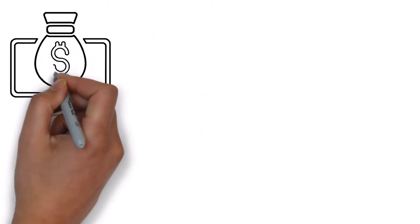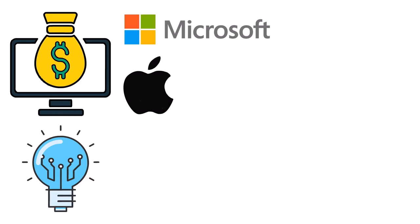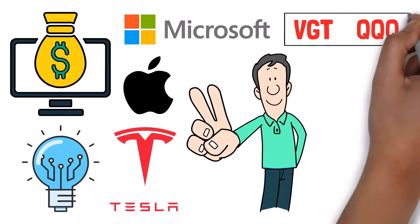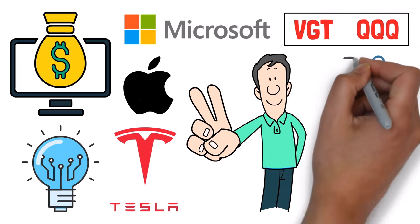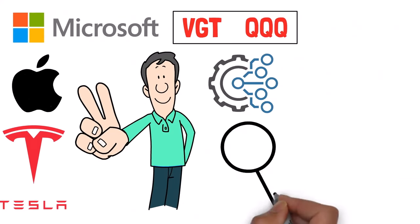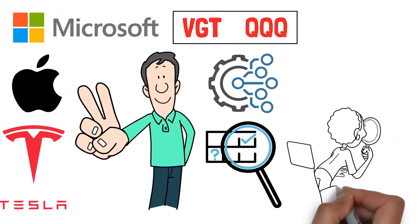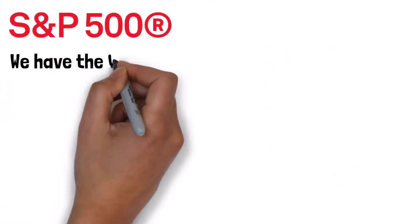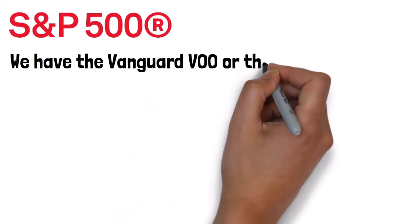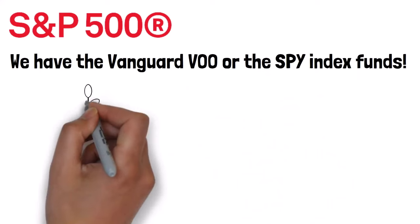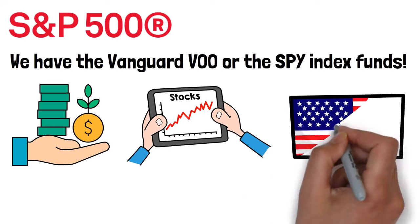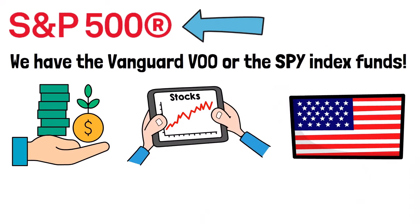So let's say you want to invest in lucrative tech companies like Microsoft, Apple, and Tesla. Two good examples of index funds that you can get are the VGT and the QQQ. These index funds allow you to invest in several tech companies like these all at once. But note that these two funds don't have the same list of companies. So you should read up on them and find out which has the tech companies that you prefer. Next, for the S&P 500, we have the Vanguard VOO or the SPY index funds. Investing in any of these means putting your money in the top 500 performing company stocks in the United States, as listed in the S&P 500 index.